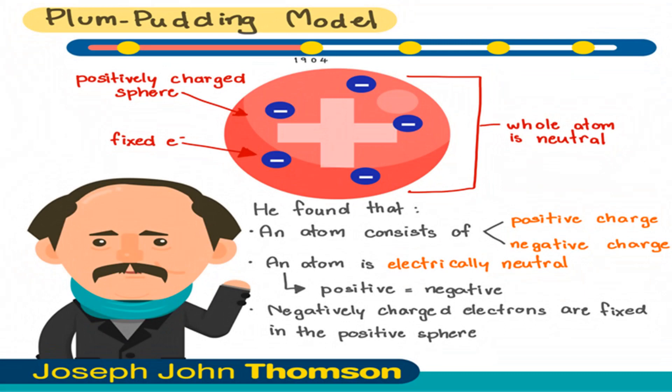Joseph John Thompson, 1856 to 1940, discovered the electron. He realized that the accepted model of an indivisible atom did not take electrons into account. Thompson therefore proposed a revised model referred to as the Plum-Pudding model. The Plum-Pudding model had negatively charged electrons stuck into a lump of positively charged material, similar to raisins stuck in dough.